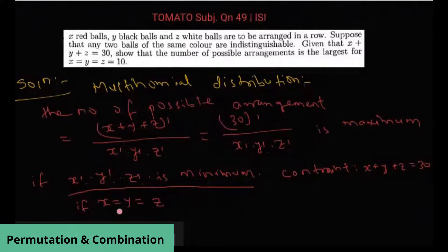If not, suppose some of x, y or z are not equal. In this case, x is equal to y is equal to z, and since x plus y plus z is equal to 30, so everything must be equal to 10.